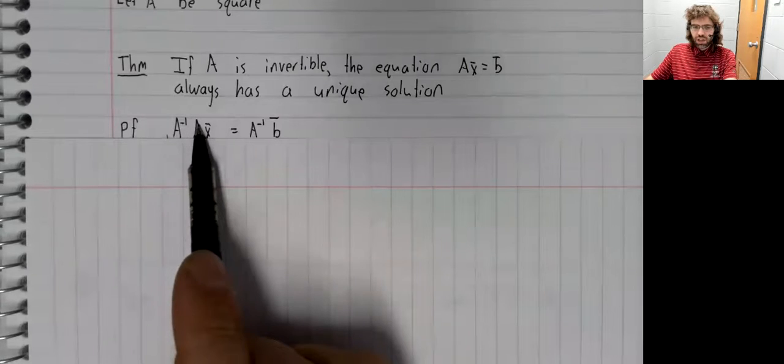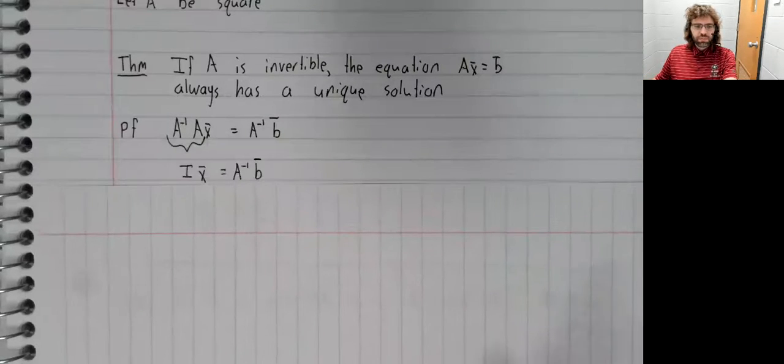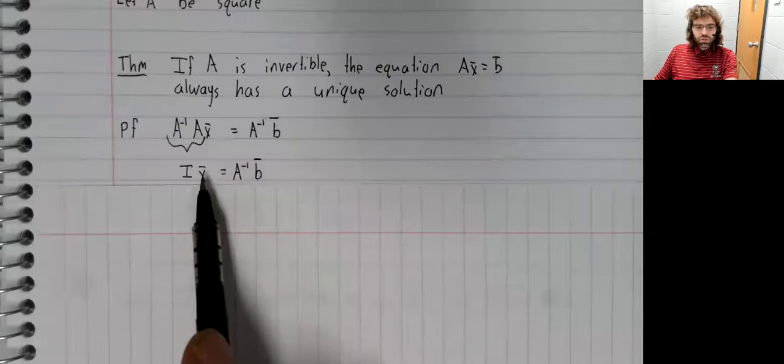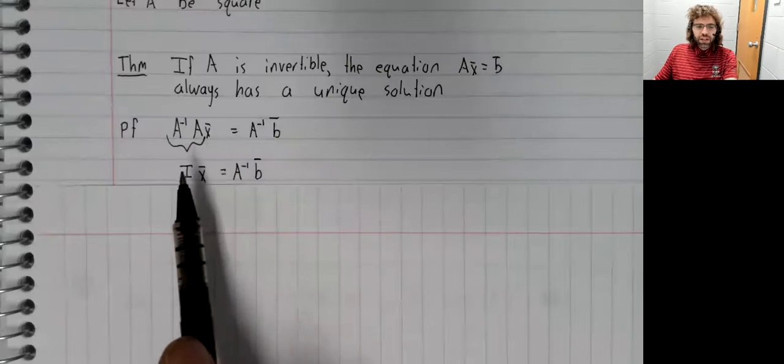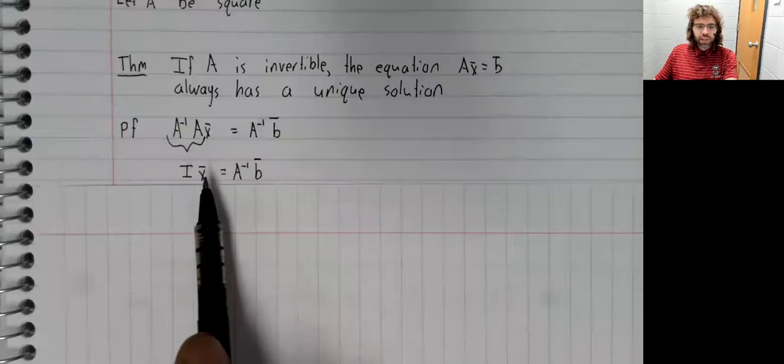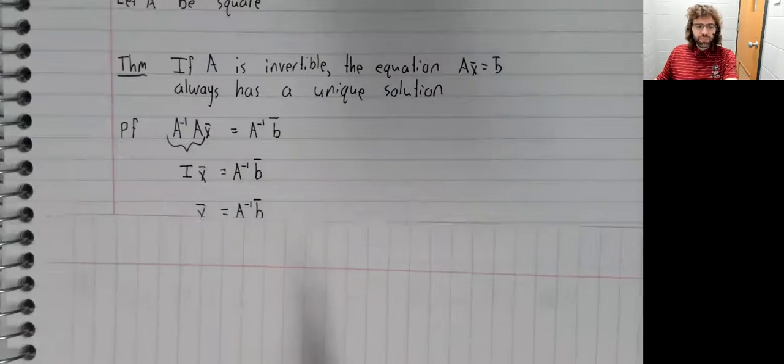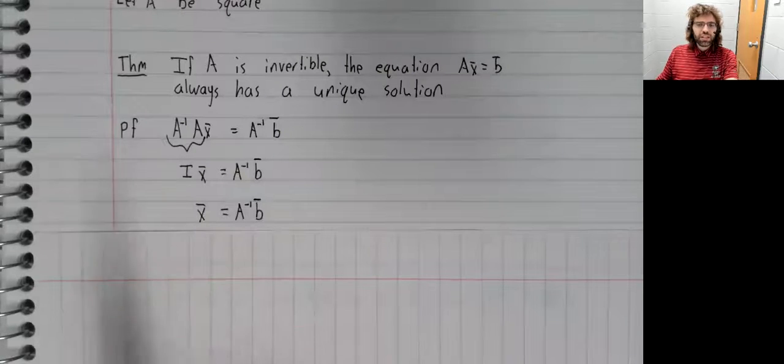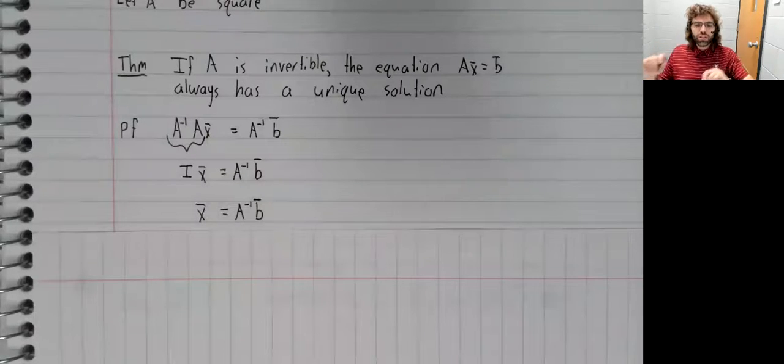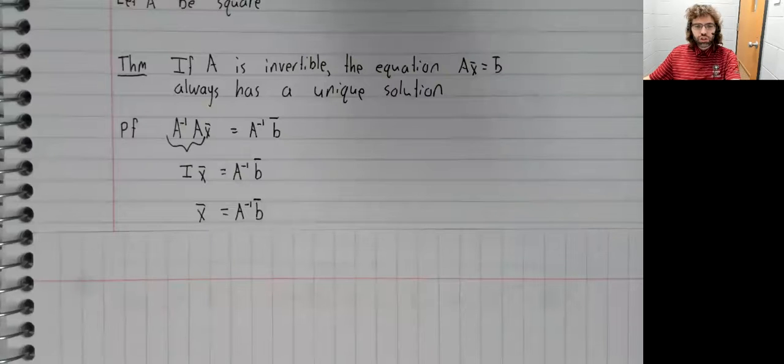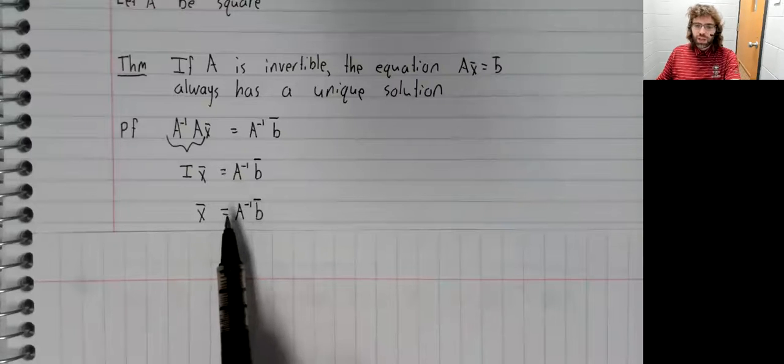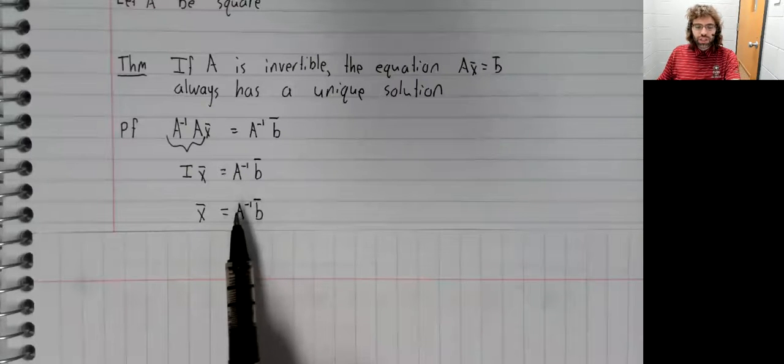A inverse times A is the identity matrix. Vectors are matrices, we don't always think of them that way, but the identity matrix times another matrix is that matrix. The identity matrix is the one of matrix multiplication. So a solution exists and it's unique because we found the solution equation, and there's only one of them.